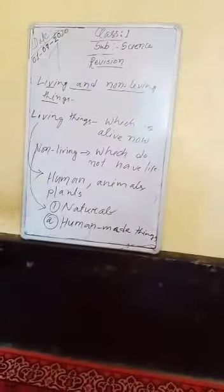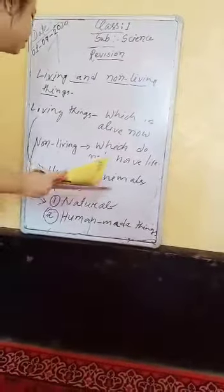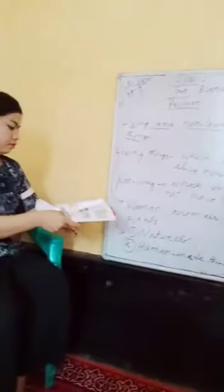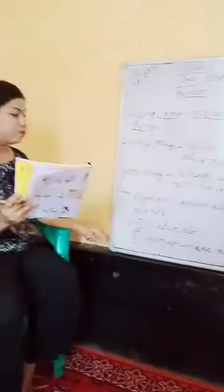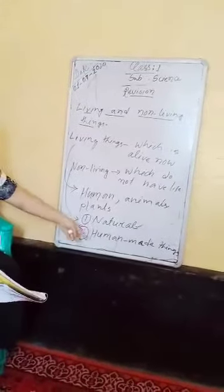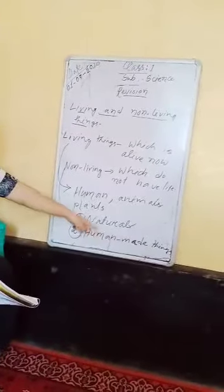Next is man-made things. Man-made things are not found in nature — these are made by humans. Examples of man-made things are table, trap, books, toy, and train. These are man-made things.